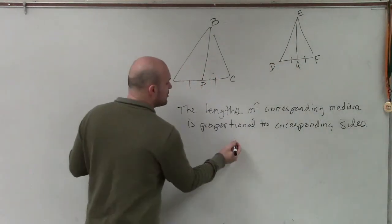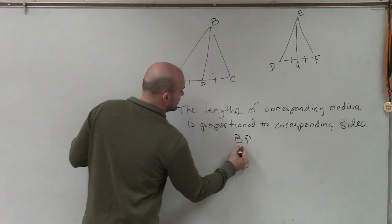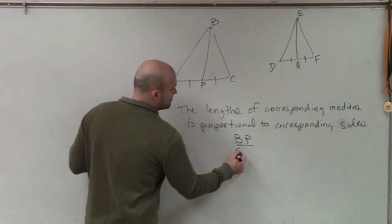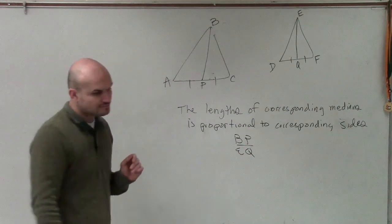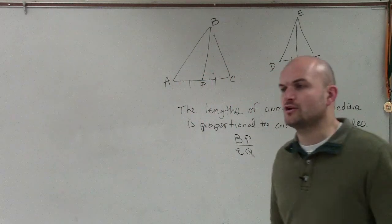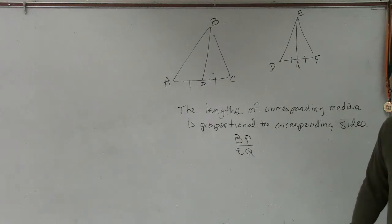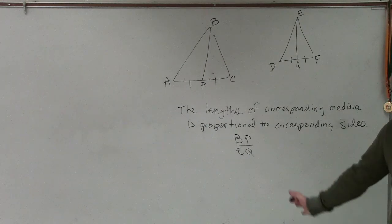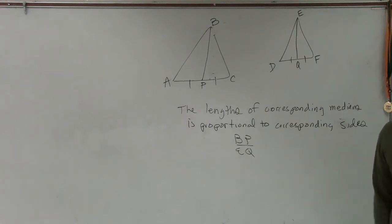So Malik, can you give me two sides that are proportional to each other? Because we know that BP is proportional to EQ. And what two sides of the triangle would also be proportional to each other? What are two corresponding sides of the similar triangles? A, B, and what?